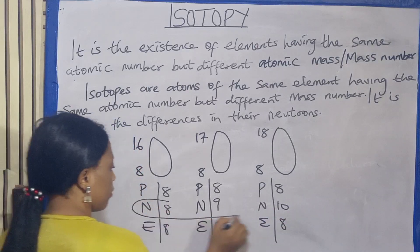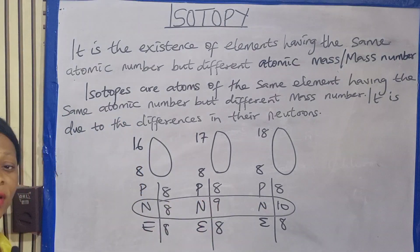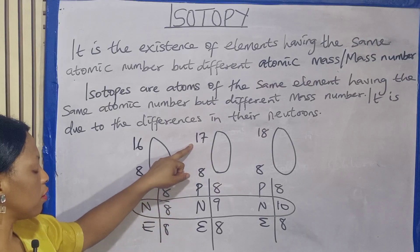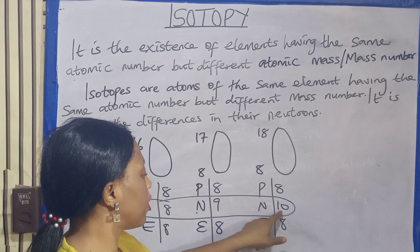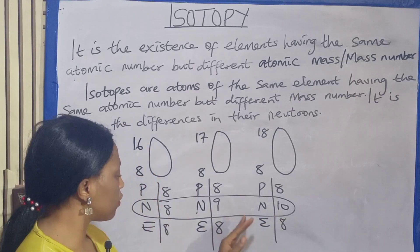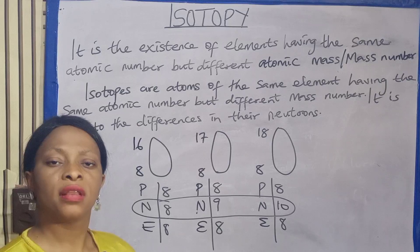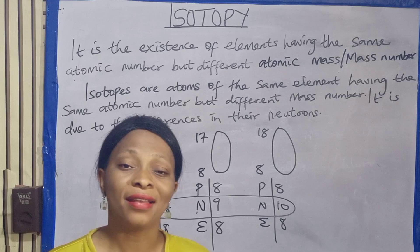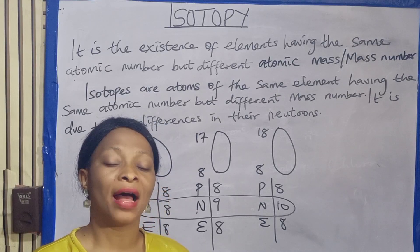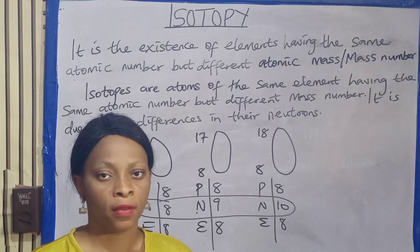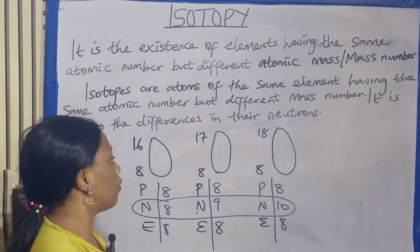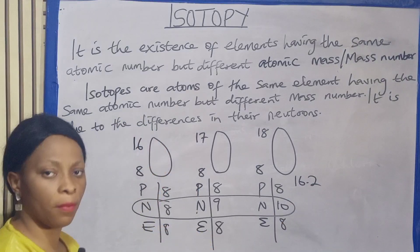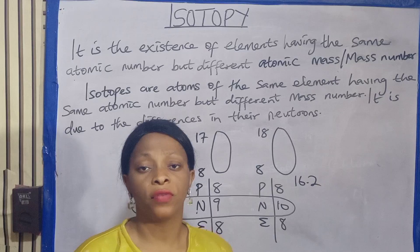So let's look at the neutron numbers here. You discover that in Oxygen-16 the neutron number is 8; Oxygen-17 the neutron number is 9; Oxygen-18 the neutron number is 10. Due to the differences in the number of the neutrons, that is why isotopes exist. Most elements exist as isotopes, and this is the major reason why atomic mass is not a whole number — because of the differences in the number of their neutrons.